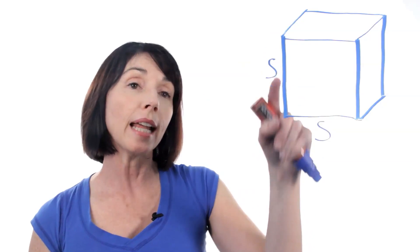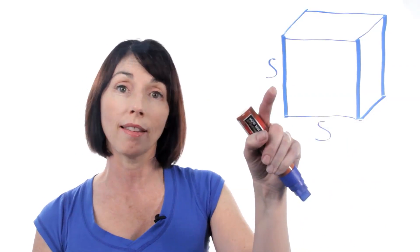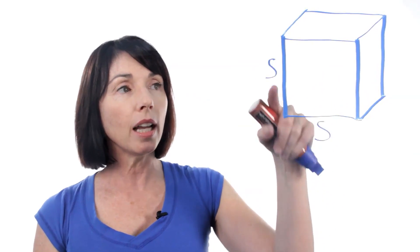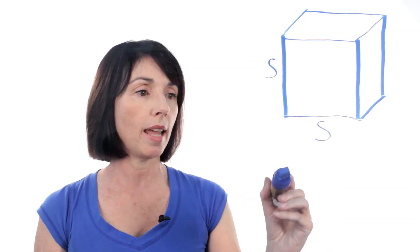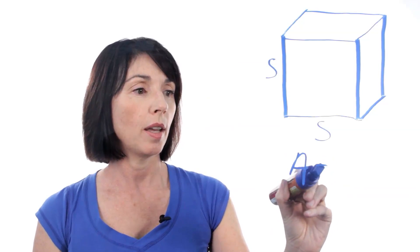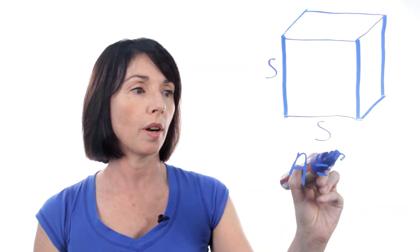That means that every edge of the cube is the same length, and we'll call that length S. Now, the area of one of the faces is just the area of a square, which is S times S, or S squared.